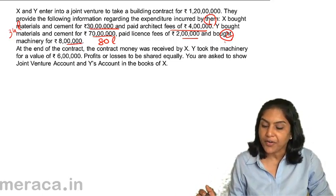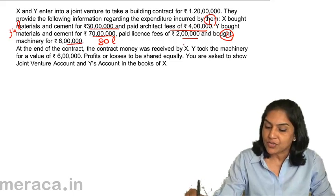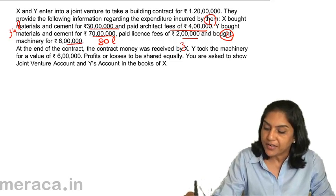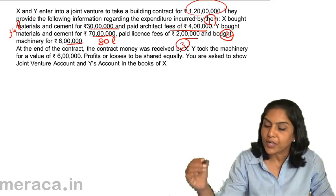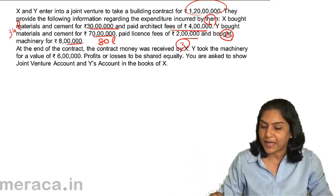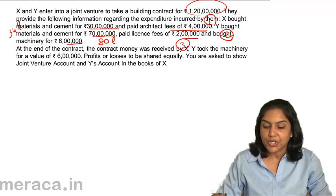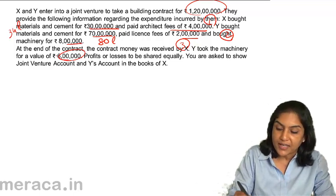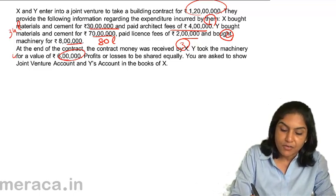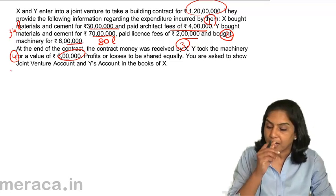At the end of the contract, the contract money is received — that is entry 3. The contract money was 1 crore 20 lakhs. Y took the machinery for a value of 6 lakhs; this is the fourth entry.